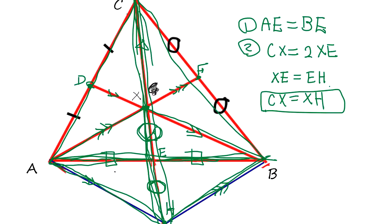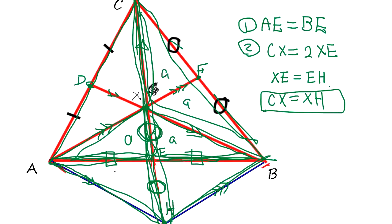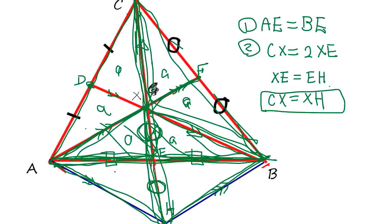And the length of CX is twice as long as XE. Now, what I'd like you to think about is why this is the center of gravity. This triangle has area A, this has area A, this has area A, and this has area A — all the same. The reason they're equal is that each area is half the triangle minus a shared region, so they cancel out to the same A. The same reasoning shows that the whole triangle is divided into equal areas.